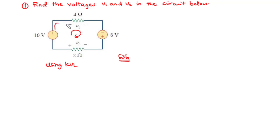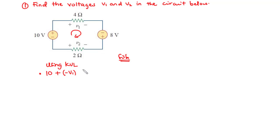When the current leaves the positive terminal, we have a positive voltage component; when it leaves the negative terminal, we have a negative component. For the 10-volt source, current leaves the positive terminal: positive 10. Here, current leaves the negative terminal: negative v1. Here, current leaves the positive terminal: plus 8. And here, current leaves the positive terminal: plus v2. The sum of all these should equal zero.